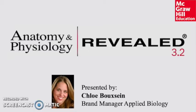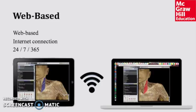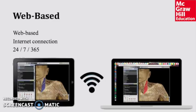This is the only dissection product that can be customized to your course. The three primary things to know about APR are as follows. APR is available in three versions: human, fetal pig, and cat. All three are available as standalone products, and the human version is the default within every AMP title offered by McGraw-Hill through the Connect platform. APR is web-based and available on any device type with an internet connection. It is the only resource available that provides state-of-the-art layering imagery of the dissection process. There are 14,000 high-resolution views of 3,600 structures and 250 animations.